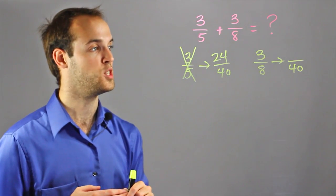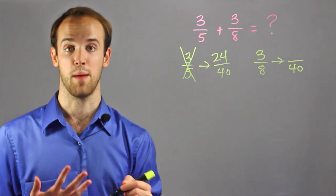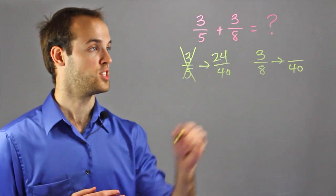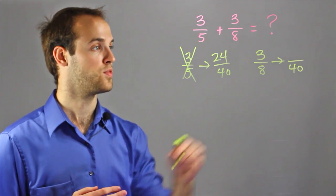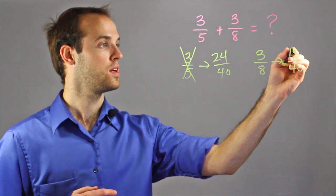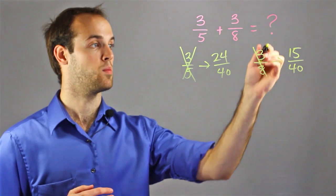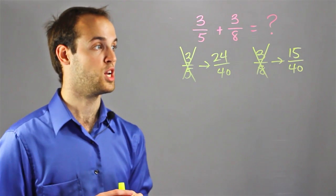Same thing with 3 eighths. What did I do to 8 to get to 40? I multiplied it by 5. So I do the same thing to the top. 3 times 5 is 15. So again, I'm not dealing with 3 eighths anymore. Now I'm dealing with 15 over 40.